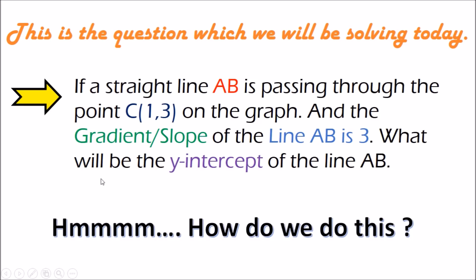Now this is the question which we will be solving today. If a straight line AB is passing through the point C where x is 1, y is 3 on a graph, and the gradient or slope of the line AB is 3, what will be the y-intercept of the line AB? Let's go find out.